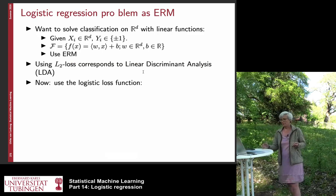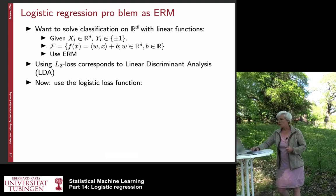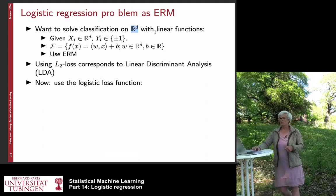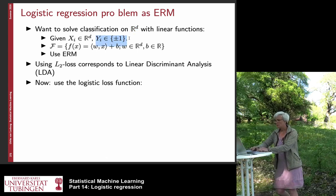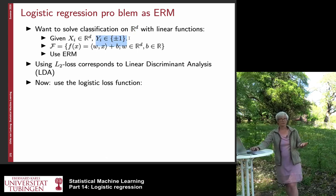We start as follows. So again, we want to solve a classification problem on R^D. So our data lives in R^D. Our output label is again plus or minus one. We are in binary classification.